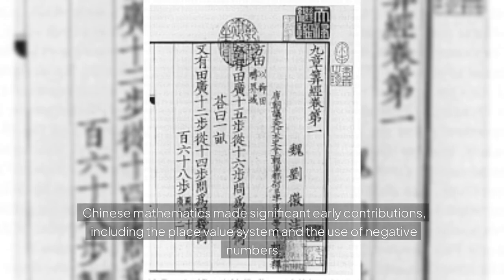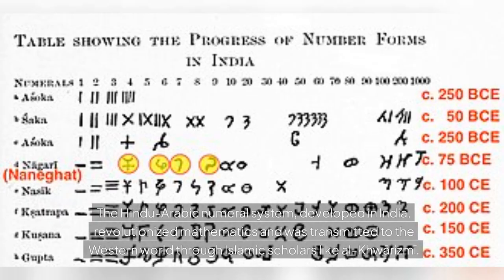Chinese mathematics made significant early contributions, including the place value system and the use of negative numbers. The Hindu-Arabic numeral system, developed in India, revolutionized mathematics and was transmitted to the Western world through Islamic scholars like Al-Khwarizmi.